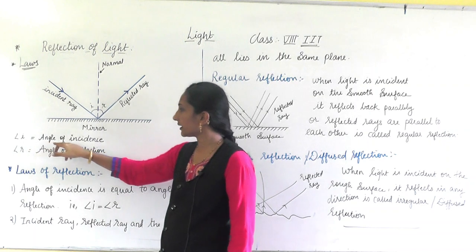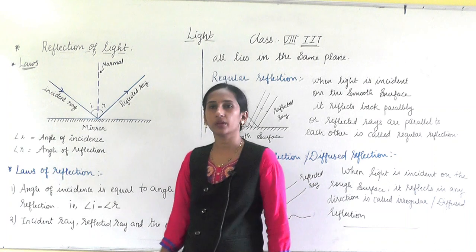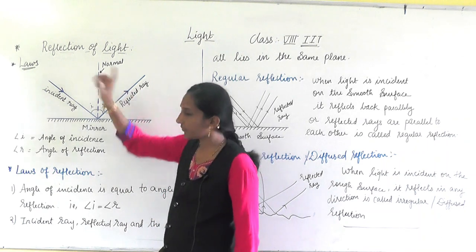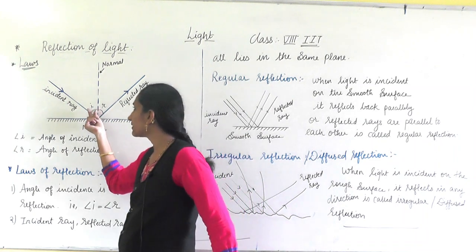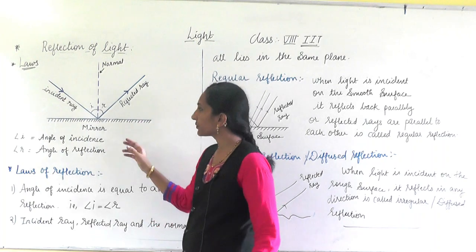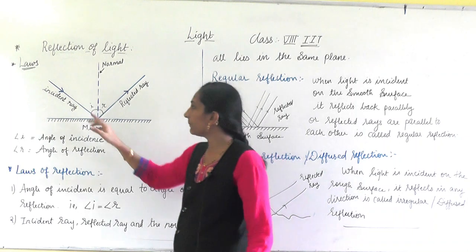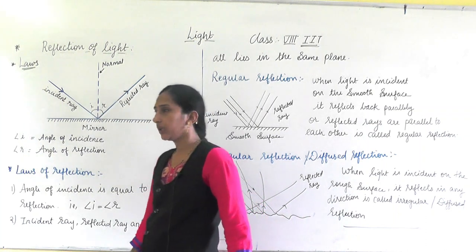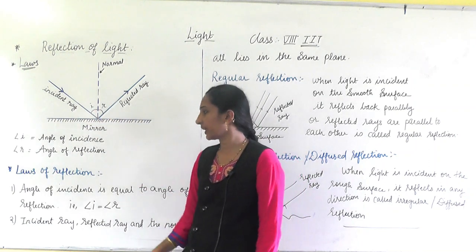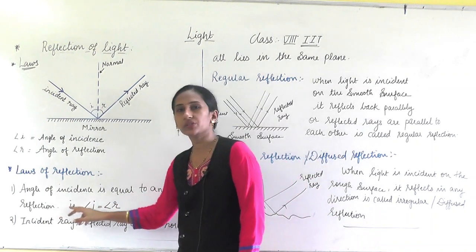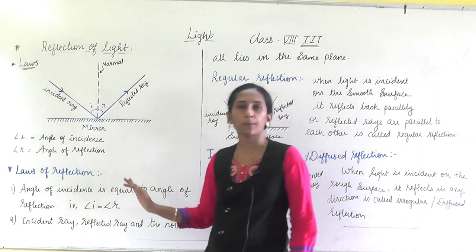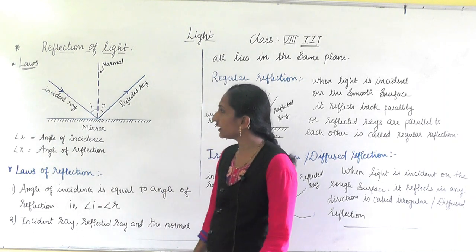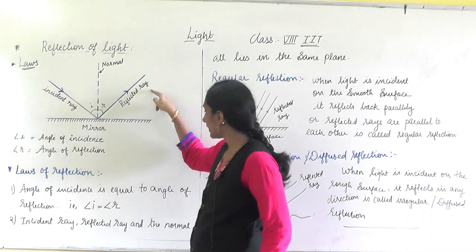The angle of incidence is written as angle i, and the angle of reflection is written as angle r. Now, the first law of reflection states that the angle of incidence is always equal to the angle of reflection, i.e., angle i = angle r. This is a very important law and you must know it.